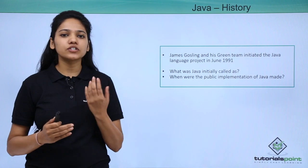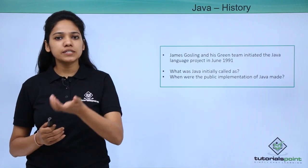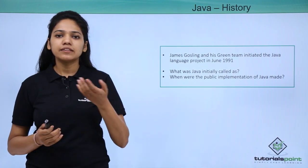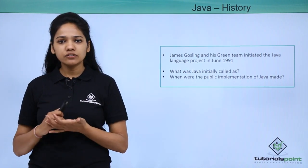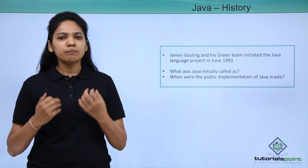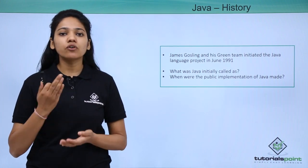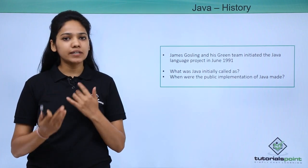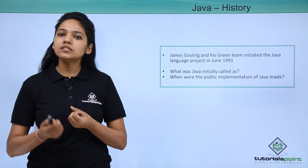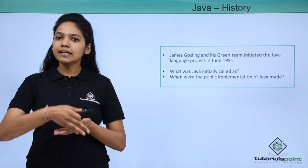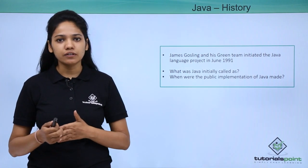Later on, the naming convention changed from Oak — it was named Green, then Java Coffee, and finally Java. Mainly, Java was initiated for interactive television, but it was too advanced at that time for the digital cable television industry.